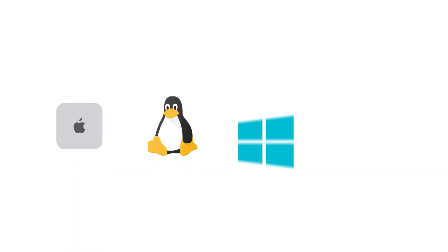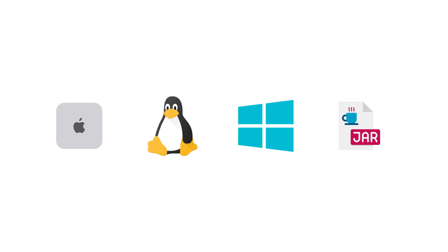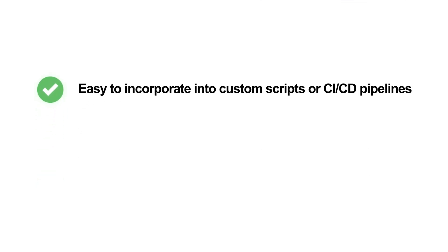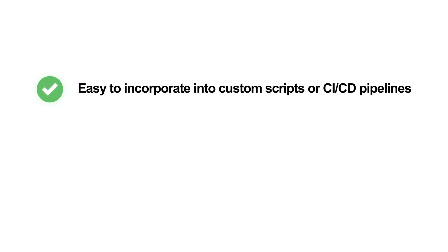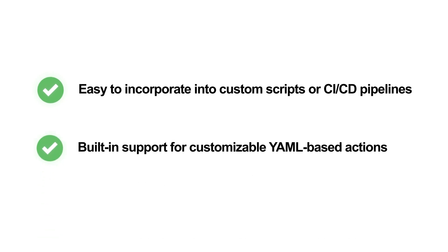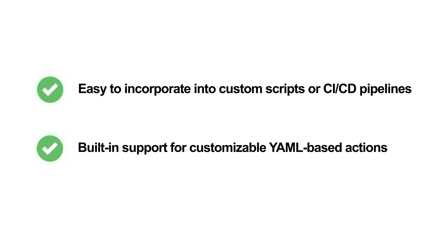The good thing is it's really widely available on nearly every system. You can use it on a Mac, Linux, Windows, or just download the Java JAR — it's really up to you. It gives you a lot of different advantages. Here are just two of them: first of all, it's really easy to incorporate into custom scripts or CI/CD systems, which I will also talk about in the use case section. And it's really customizable — there's built-in support for YAML-based app actions, which is really powerful. We will also talk about that a little bit later or in another video.